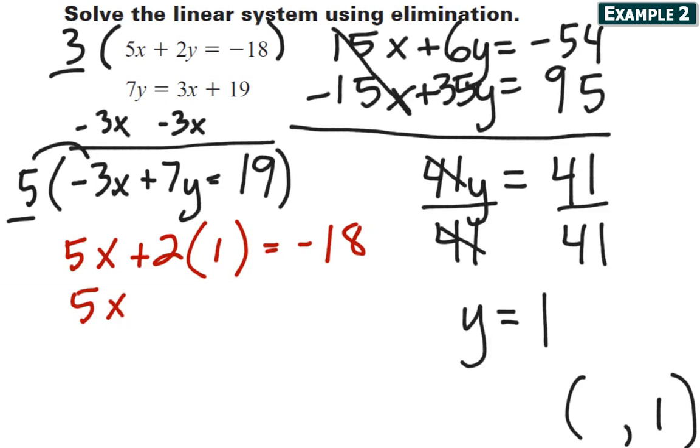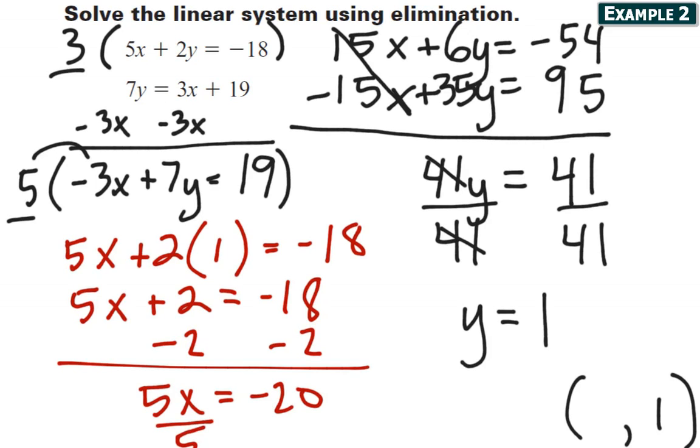So 5x plus 2 equals negative 18. Subtract 2 from both sides. 5x equals negative 20. Divide by 5. X should equal negative 4. And now I've got the rest of my solution.